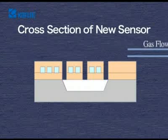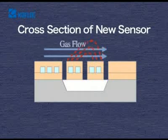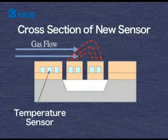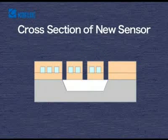When gas flows, the temperature distribution in the heater section changes in the manner shown here. This change in power is detected by the bridge circuit and is taken out as a flow signal.